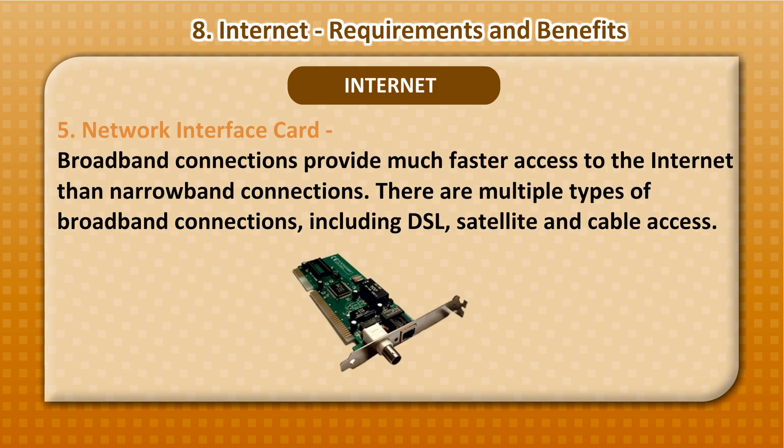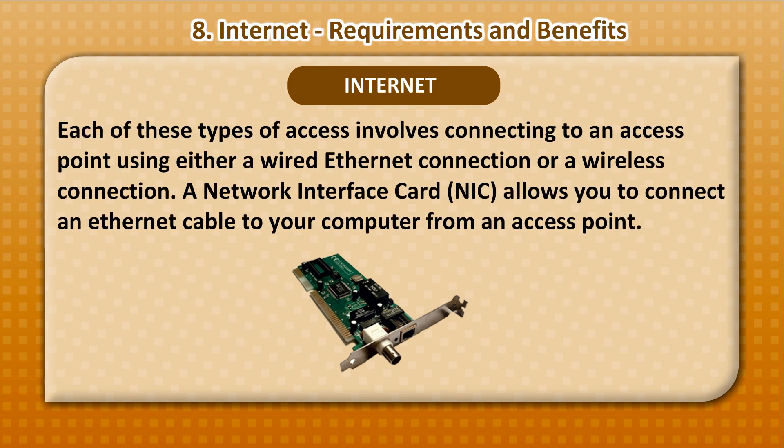5. Network Interface Card: Broadband connections provide much faster access to the Internet than narrowband connections. There are multiple types of broadband connections, including DSL, satellite and cable access. Each of these types involves connecting to an access point using either a wired Ethernet connection or a wireless connection. A Network Interface Card (NIC) allows you to connect an Ethernet cable to your computer from an access point.